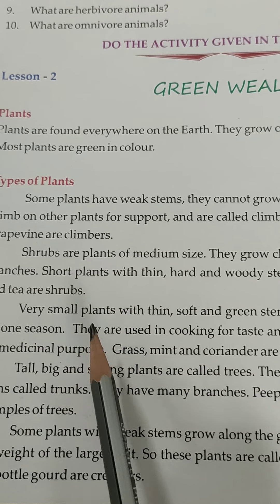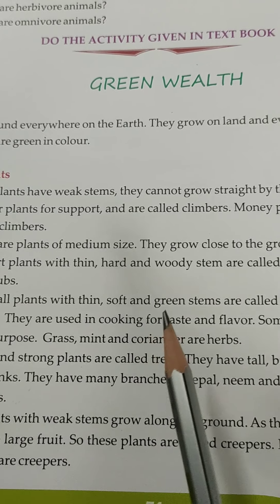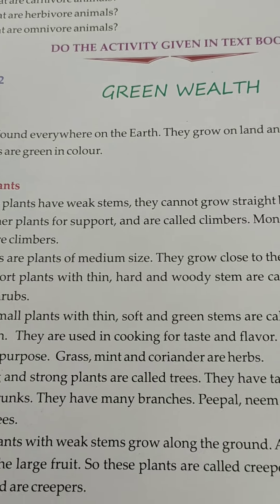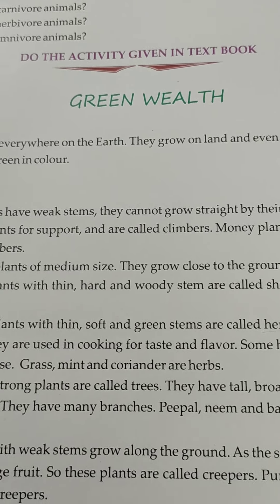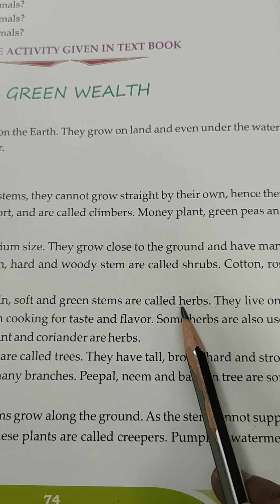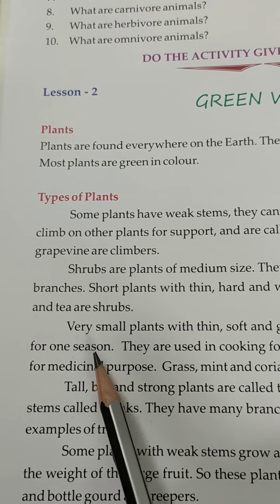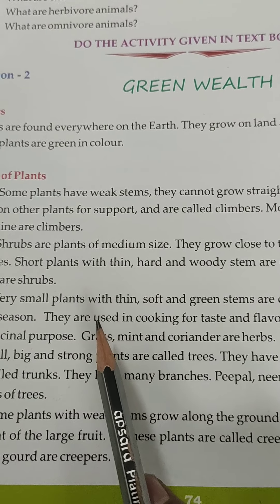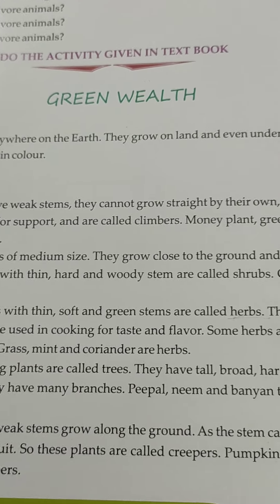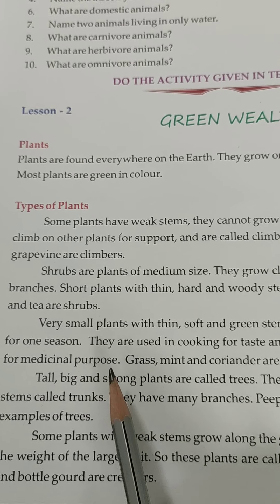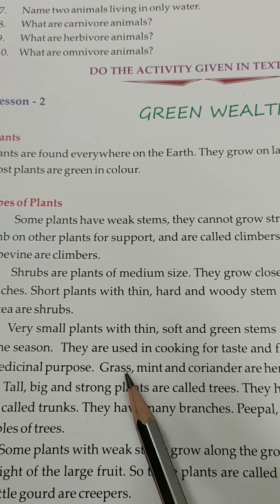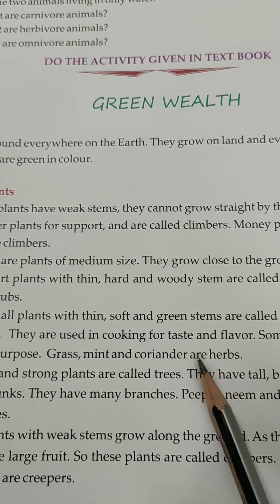Very small plants with thin, soft, and green stems are called herbs. They live only for one season. They are used in cooking for taste and flavour. Some herbs are also used for medicinal purposes. For example, grass, mint, and coriander are herbs.